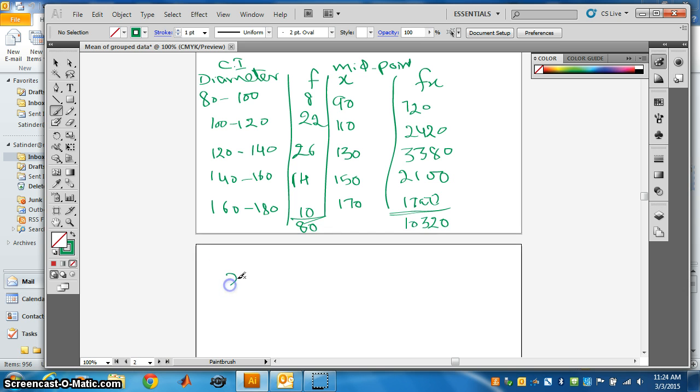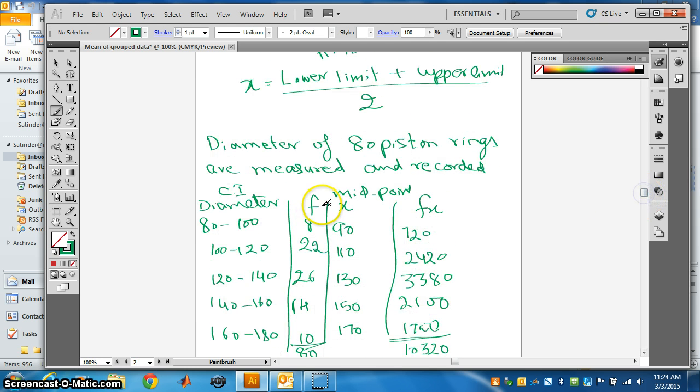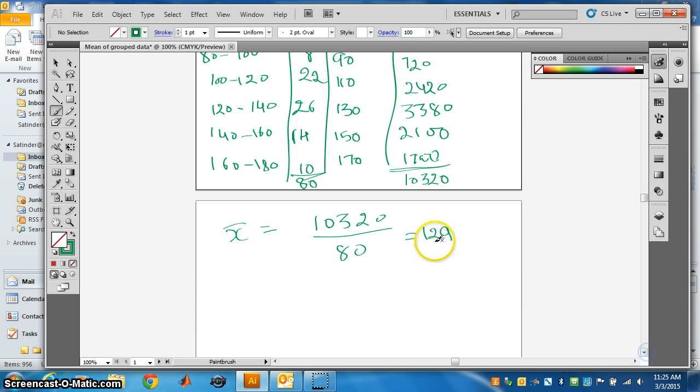Therefore, arithmetic mean is equal to 10320 divided by 80. And if we divide this by 80, we get the answer as 129. Now, if they give us any unit in diameter, we use the same unit. The diameter is in millimeters, so the average is 129 millimeters.